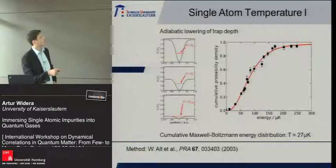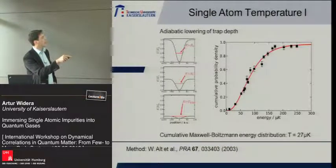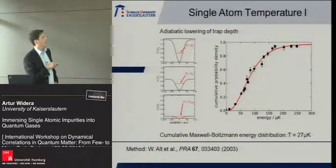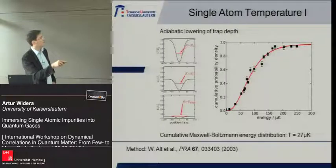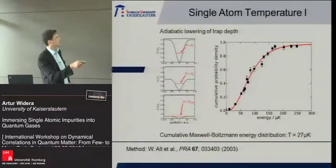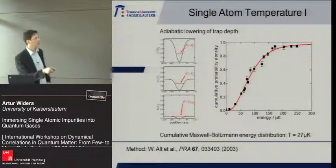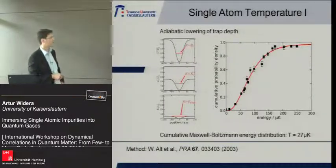The first method to extract the kinetic energy distribution is by adiabatically lowering the trap depth. The atom has a certain initial energy; we adiabatically lower the trap depth, and at some point the particle can escape. Mapping the survival probability versus trap depth, we can calculate back the initial energy, giving us the cumulative Maxwell-Boltzmann distribution. This shows, for example, that 60% of the atoms have energy smaller than roughly 50 microkelvin. This is a real energy scale divided by k_B. A fit of this distribution gives a temperature of about 27 microkelvin.